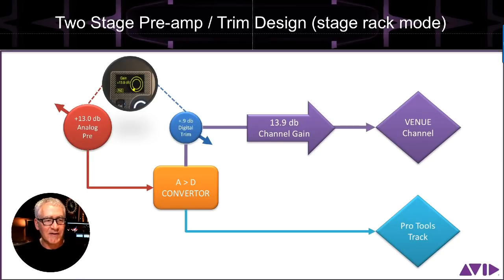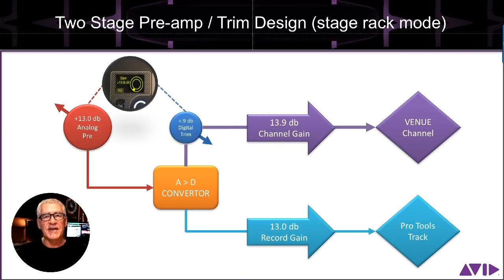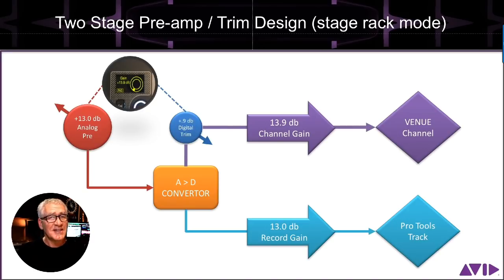You might be thinking, what kind of gain does Pro Tools get? How does that impact the record level? Pro Tools takes its tap directly from the A-to-D converter, pre-digital trim. So that translates into 13.0 dB of record gain — that is going to be our record level for the track. You might wonder why they separated those two things. Honestly, it'll only ever be 0.9 dB of difference maximum, so it's still very acceptable in terms of record level.